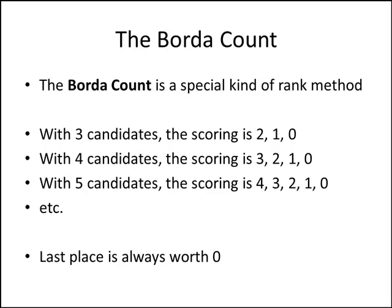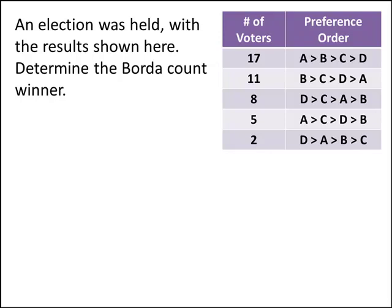Last place is always worth 0, and first place is always worth 1 less than the number of candidates. With three candidates, first place was worth 2; with four candidates, worth 3; with five candidates, worth 4 — going down by 1 each step until you end at 0. We already used a different rank method and found that B was the winner, but now we're using a different rank method with different point values.